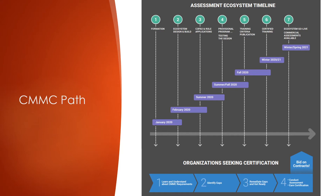Some contracts will already have the CMMC requirements listed in them. This means that all Department of Defense contractors or organizations thinking of bidding on upcoming contracts should begin learning and understanding the CMMC requirements at each level and really start thinking about what maturity level they are aiming to get certified for. The organization should then start to identify any cybersecurity gaps within their information systems or networks and begin remediating these gaps so everything is in accordance with the practices and processes found within that CMMC maturity level.